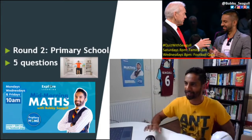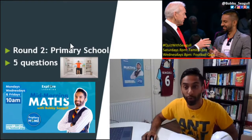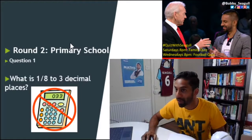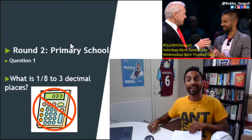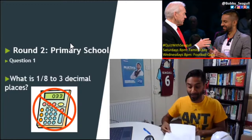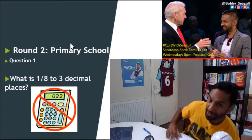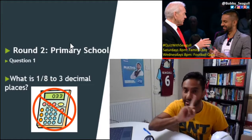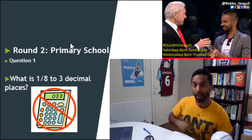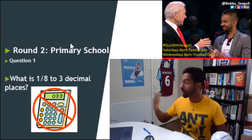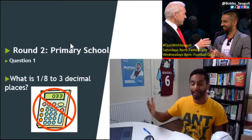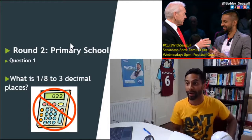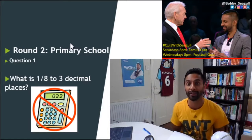Tanner's getting zero. Okay, so here we go — primary school questions. Round two. Question 1: what is 1 out of 8 to 3 decimal places? No calculators, no cheating with Mr. Seagull. You can use short division, long division, the bus stop method — you could have memorised things — but no googling or calculators. So what is 1 out of 8 to 3 decimal places?